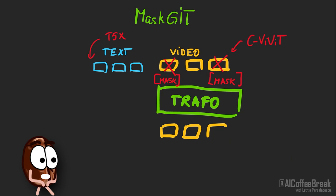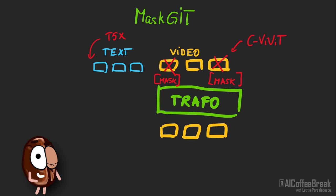But since some video tokens are already predicted, the next predictions are informed by the video tokens from the last iteration and, of course, the text. So now the frames should be more coherent. And in about 12 to 48 steps of predicting all video tokens and masking a fraction again, MaskGit produces the final video.